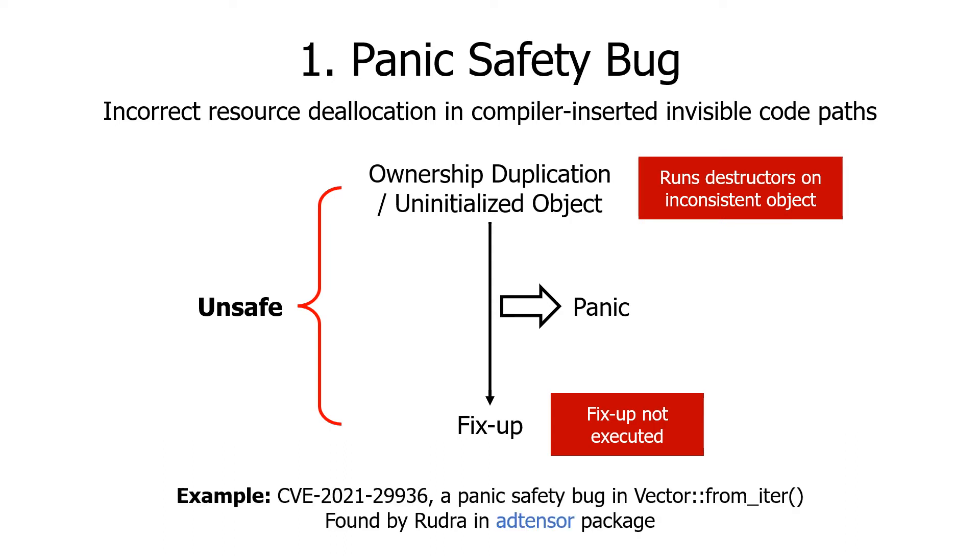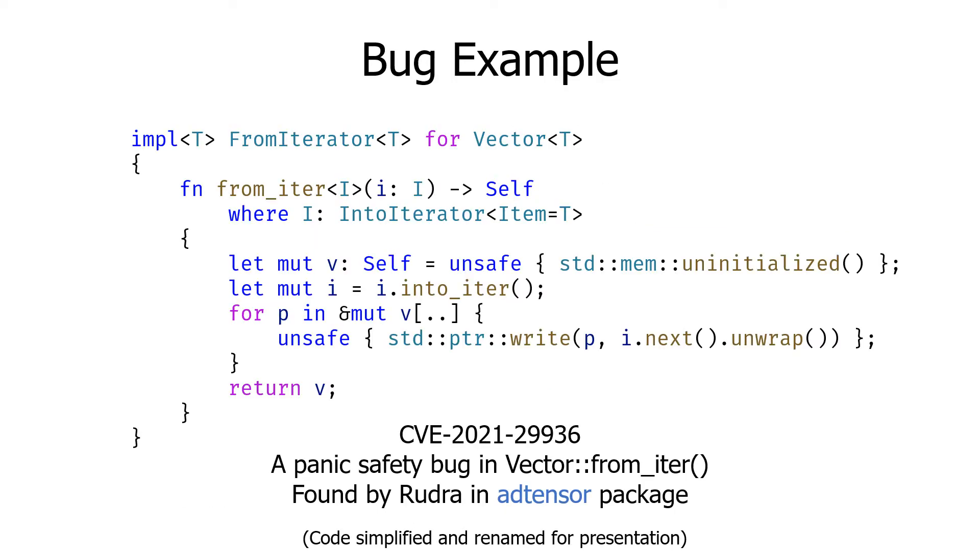Rudra found a panic safety bug in Vector from Iter API in ndarray package. This is the code example for panic safety bug in ndarray package. This API provides a way to initialize a third-party vector type. It takes an iterator from the user and initializes itself using the elements returned from it. It first creates an uninitialized vector, prepares an iterator, iterates the items to initialize the vector, and finally returns the result. The bug here is that the next call on the user-provided iterator might panic, and if it happens, it calls the destructor on the uninitialized self type, potentially leading to calling a destructor on arbitrarily initialized memory, leading to a memory safety bug.